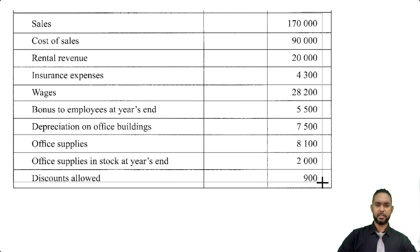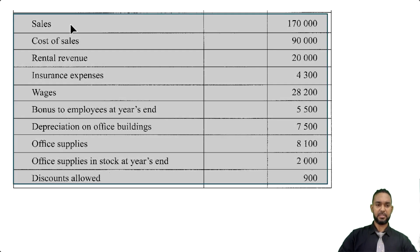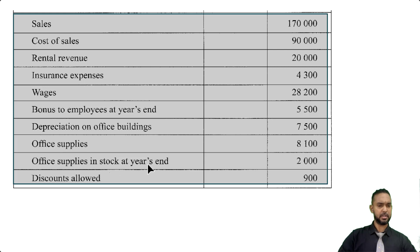Let's pull up the bottom half of the table. We have sales, cost of sales, rental revenue, insurance expenses, wages, bonus to employees at year's end, depreciation on office buildings, office supplies, office supplies in stock at year's end, and discounts allowed.